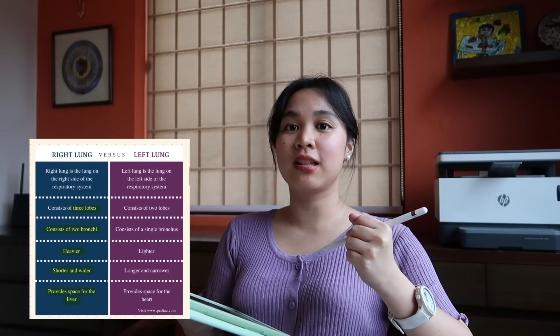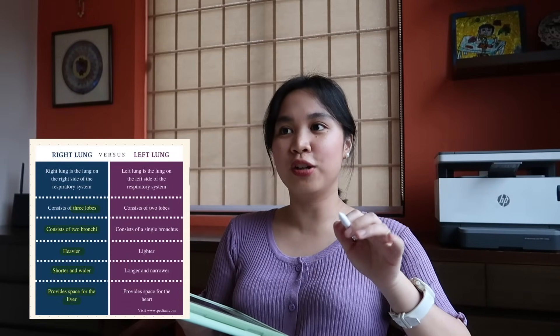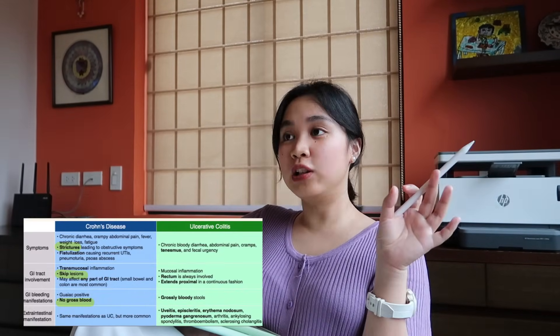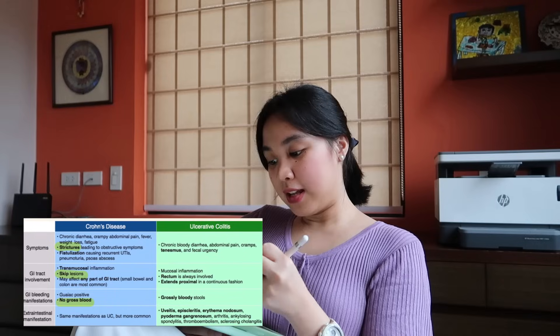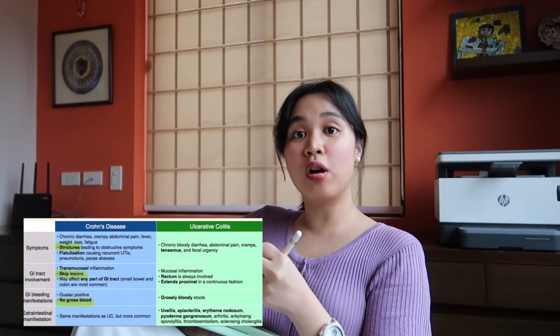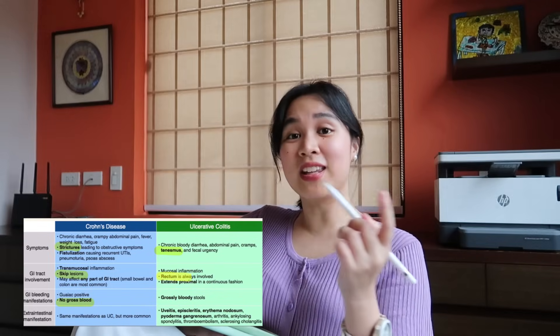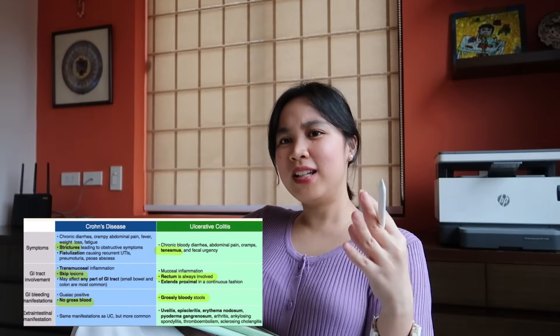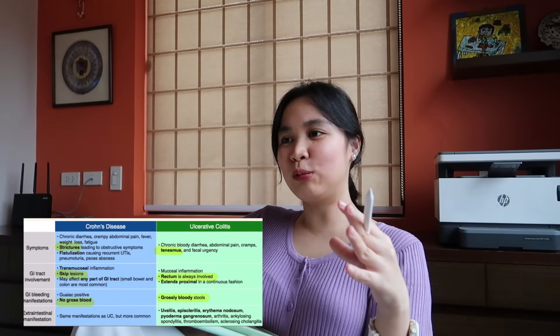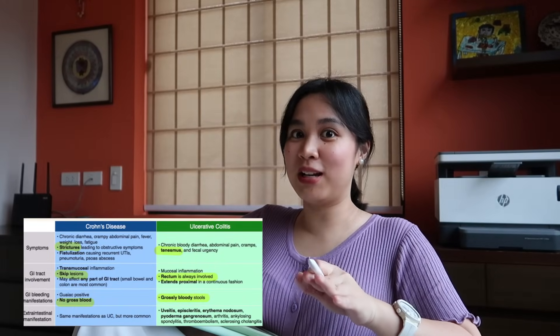When they ask about the difference between the right and left lung, I just remember the characteristics of the right lung and eliminate the choices that belong to the left. For diseases like Crohn's disease and ulcerative colitis — which have many similarities — memorize their differences instead. For Crohn's: strictures, skip lesions, and no gross blood. For ulcerative colitis: tenesmus, rectum always involved, and grossly bloody stools.